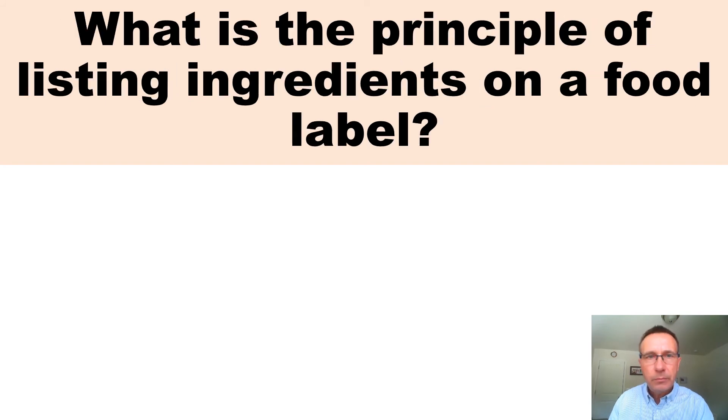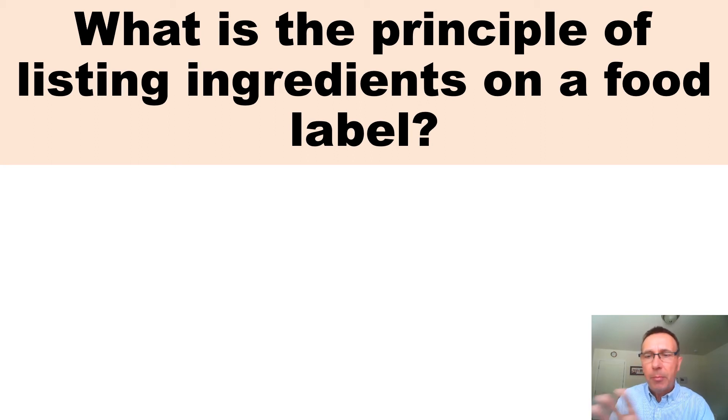The following constitute benefits of cooking or heating foods — they are outlined in chapter 2 of your course pack. The principle of listing ingredients on a food label: from the bulkiest by weight to the least bulky by weight. Very simple.